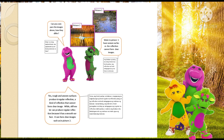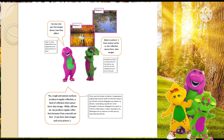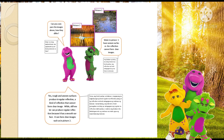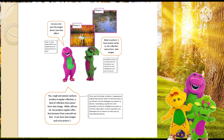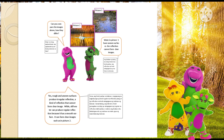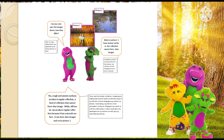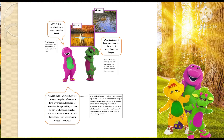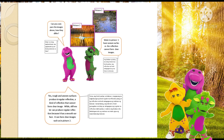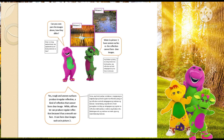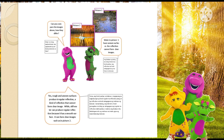Can you compare the images above and how they differ? Water in picture 1 has an uneven surface, so the reflection cannot form a clear image. Rough and uneven surfaces produce irregular reflection — a kind of reflection that cannot form a clear image. While still water can produce regular reflection because it has a smooth surface, it can form a clear image such as in picture number 2.